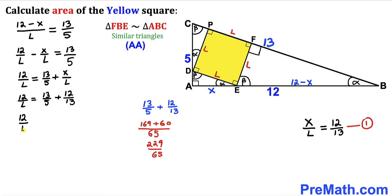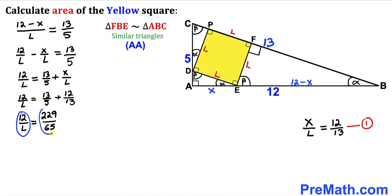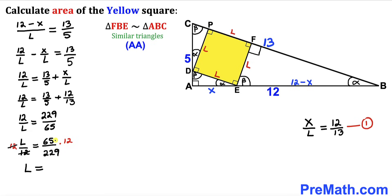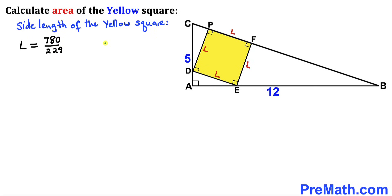So we can write 12/l = 229/65. Flipping both fractions gives l/12 = 65/229. Multiplying both sides by 12, the 12s cancel, and our length l turns out to be 65 × 12 = 780, divided by 229. So the side length of this yellow square is 780/229.